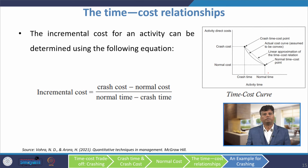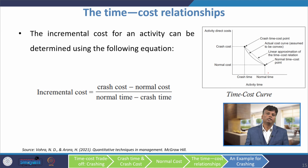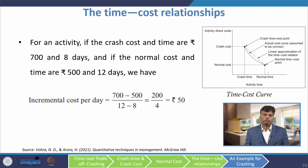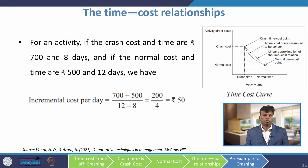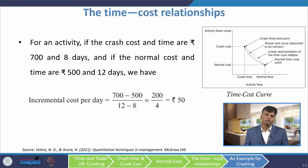The incremental cost of an activity can be determined using the following equation: incremental cost equals the difference in crash cost and normal cost divided by the difference in normal time and crash time. For example, if crash cost is 700 and crash time is 8 days, and normal cost is 500 and normal time is 12 days, the incremental cost is (700−500)/(12−8) = 50 rupees per day. This means if you reduce an activity's duration by one day, the cost increases by 50 rupees.